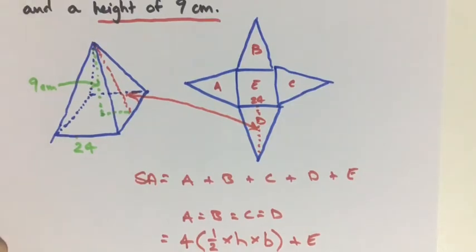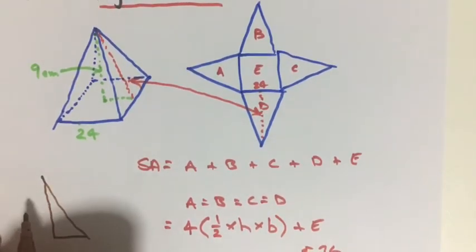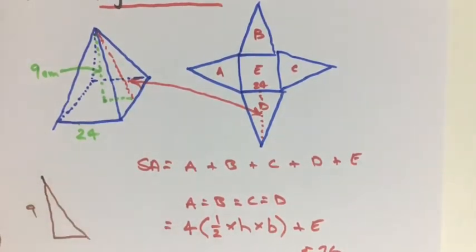So by using Pythagorean theorem we can find that. So let's work that out over here. So we know the height is 9.